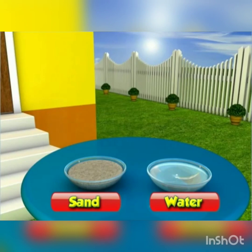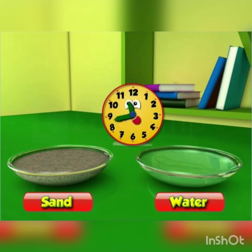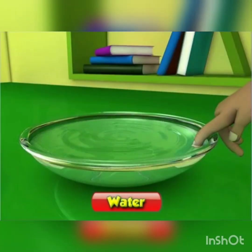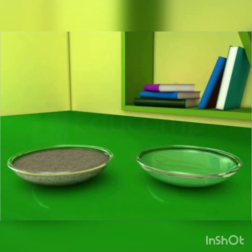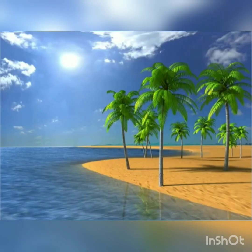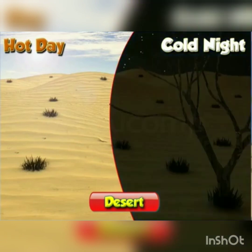Let us do the same activity again but a bit differently. This time, keep the containers inside a room for about an hour. What do you find? Which is cooler? You will see that the sand is cooler than water. So now we know that sand gets warmer faster than water. It also cools faster than water. Thus, this activity proves that sand warms up as well as cools down quickly. This is why the days are hot and nights are cold in the desert area.